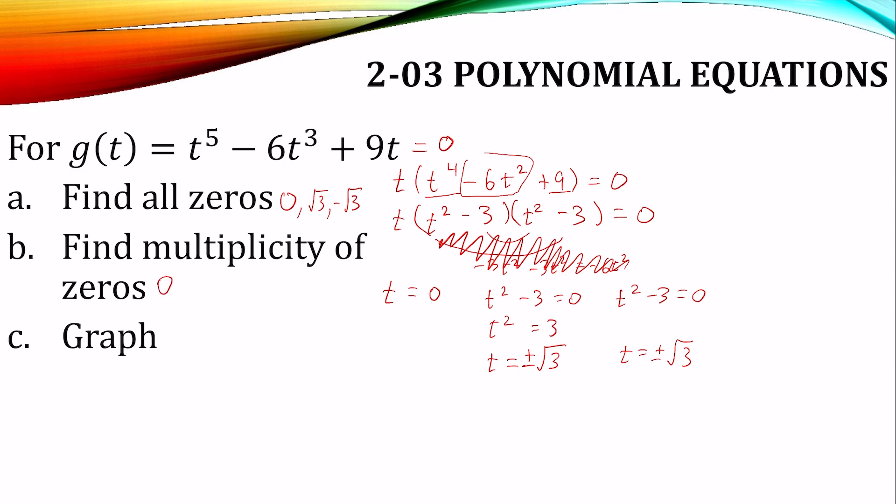How many times do we have the zero? Once. How about √3? The multiplicity was twice. And how about -√3? It's also twice because we had it once, twice. So how many of those did we have? We had five total zeros. The degree was five.